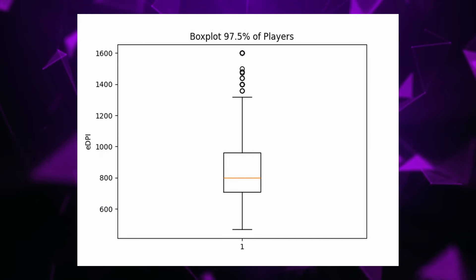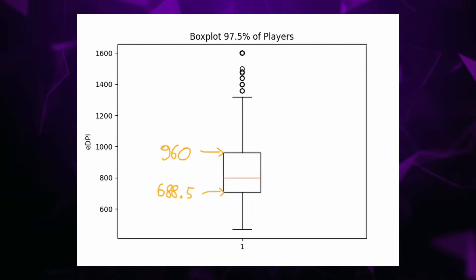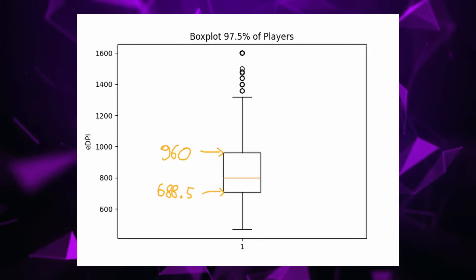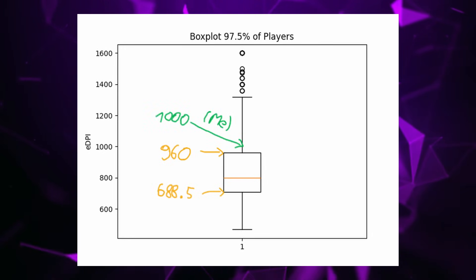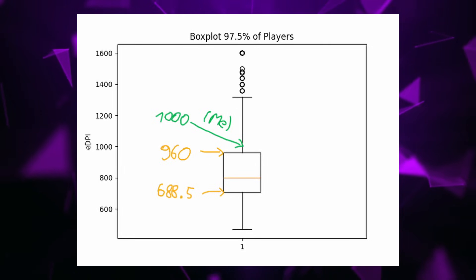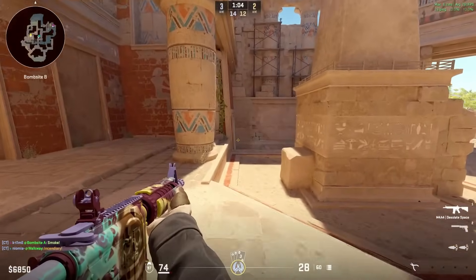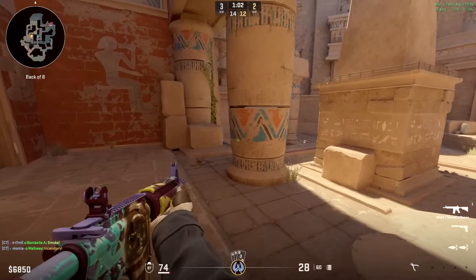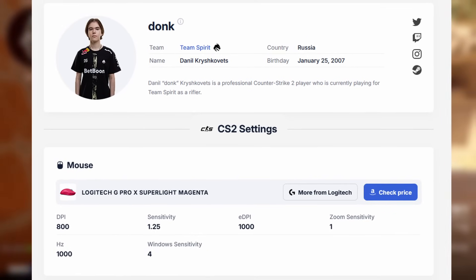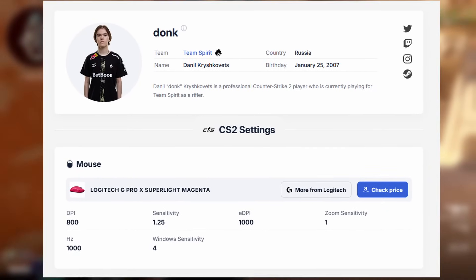50% of all pro sensitivities are between 688.5 and 960 effective DPI. So, I am well off the average, the median and well outside the area of most used sensitivities, which felt rather weird to me since I knew for instance donk is playing on 1000 eDPI as well and therefore assumed that there would be a lot of players trying to copy him.